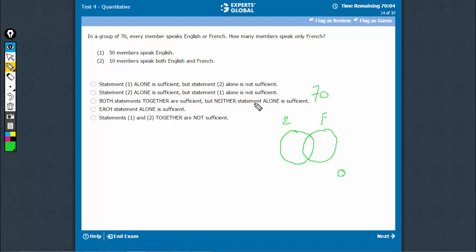Statement 1 says 50 speak English. The question is asking this part, French alone. So if 50 speak English, that means all of this is 50. This is 50, this is 0. So this must be 20. Statement 1 is sufficient.